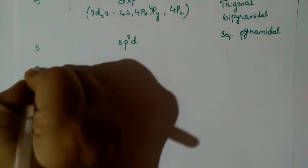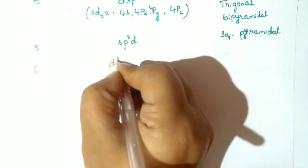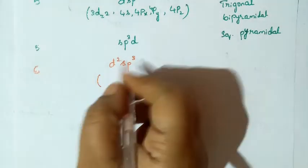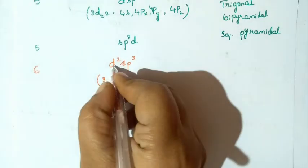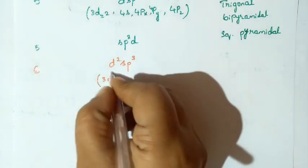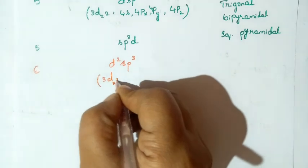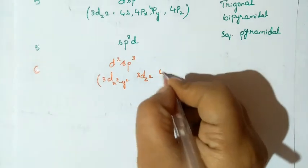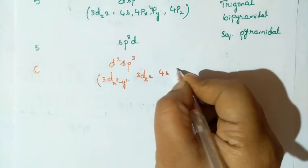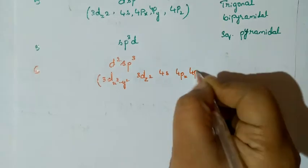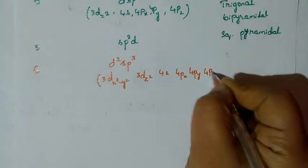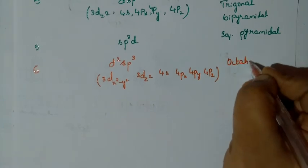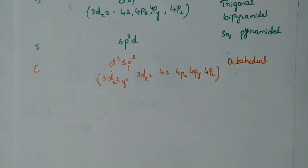For coordination number 6, the hybridization is D2SP3. Since it starts with D, the orbitals are 3D x²−y², 3D z², 4S, 4PX, 4PY, and 4PZ. For coordination number 6, there is only one geometry: octahedral.